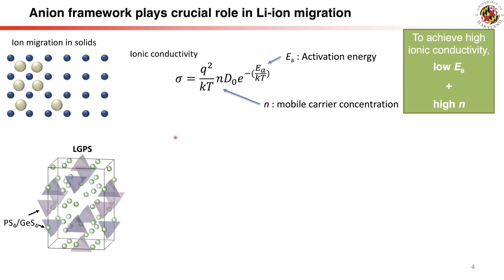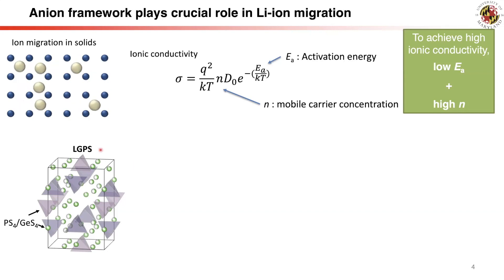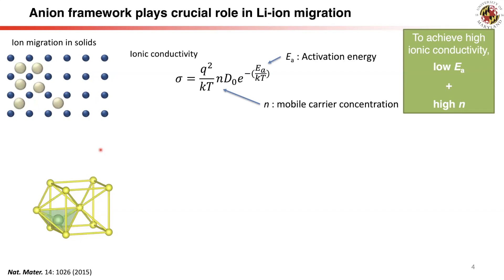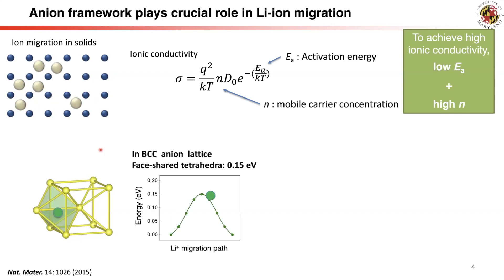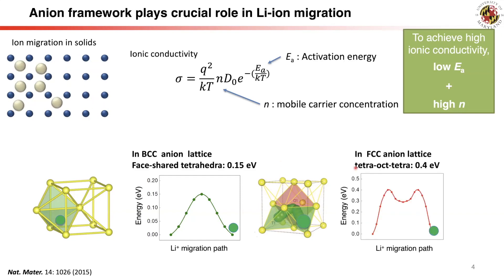At the atomic scale, lithium-ion diffusion happens through the hopping of ions from one site to another. Having a low energy barrier for ion migration is critical for fast ion diffusion and high ionic conductivity. Computation work has shown the crucial role of the ion framework in determining lithium sites, migration pathways, and energy barriers. For example, LGPS has a body-centered cubic ion framework where lithium occupies tetrahedral sites and migrates with a low barrier of 0.15 eV. By contrast, a face-centered cubic framework gives a tetrahedral-octahedral-tetrahedral migration pathway with a 0.4 eV barrier, leading to a full order of magnitude lower conductivity.